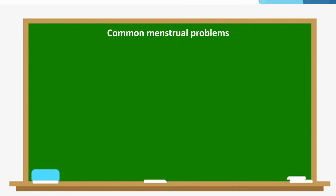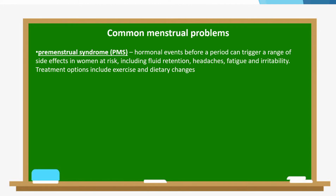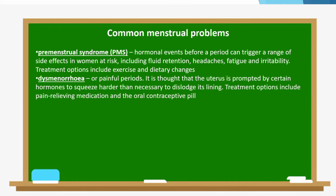Common menstrual problems due to hormonal imbalance: first, premenstrual syndrome — hormonal events before a period can trigger fluid retention, headaches, fatigue, and irritability; treatment options include exercise and dietary changes. Next, dysmenorrhea or painful periods — the uterus is prompted by certain hormones to squeeze harder than necessary to dislodge its lining; treatment options include pain-relieving medications and oral contraceptive pills.